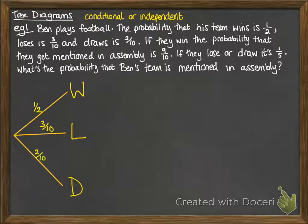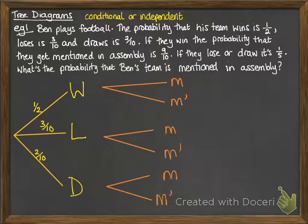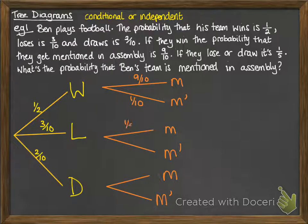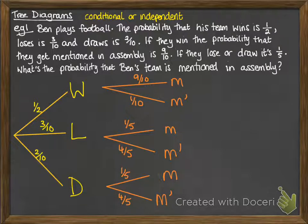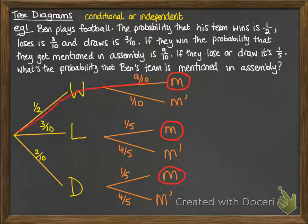They can either win, lose, or draw. And then after that has happened, the probability of getting a mention — we'll note down as mention or not mention with that little dash. So after a win, it could be 9 tenths, which means the probability of not getting a mention is 1 tenth. After a loss or a draw, it's 1 fifth for a mention and 4 fifths for not being mentioned. So the probability of being mentioned covers those three branches.